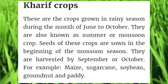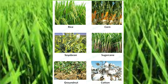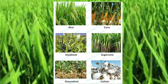What are Kharif crops? These are crops grown in the rainy season during the months of June to October. They are also known as summer or monsoon crops. Seeds of these crops are sown at the beginning of the monsoon season and they are harvested by September or October. Examples include maize, sugarcane, soybean, groundnut, and paddy.